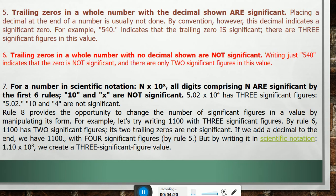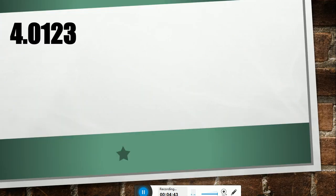Its two trailing zeros are not significant. If we add a decimal to the end, we have 1100. with four significant figures by Rule 5. But by writing it in scientific notation, 1.11 × 10^3, we create a three-significant-figure value.